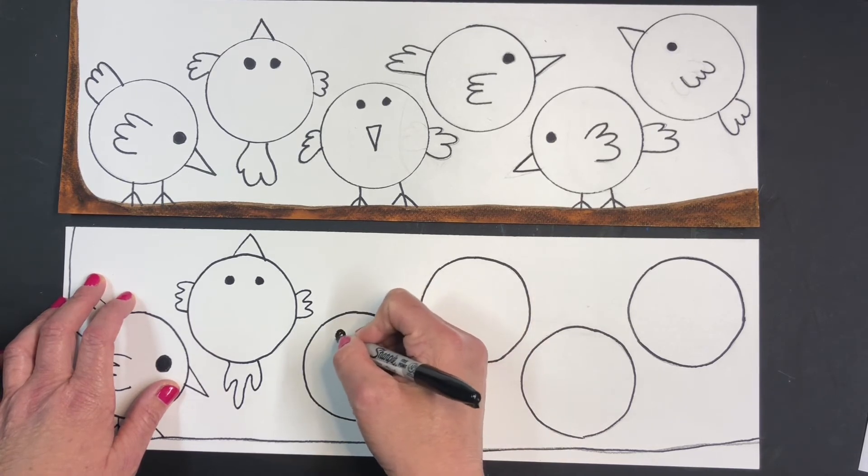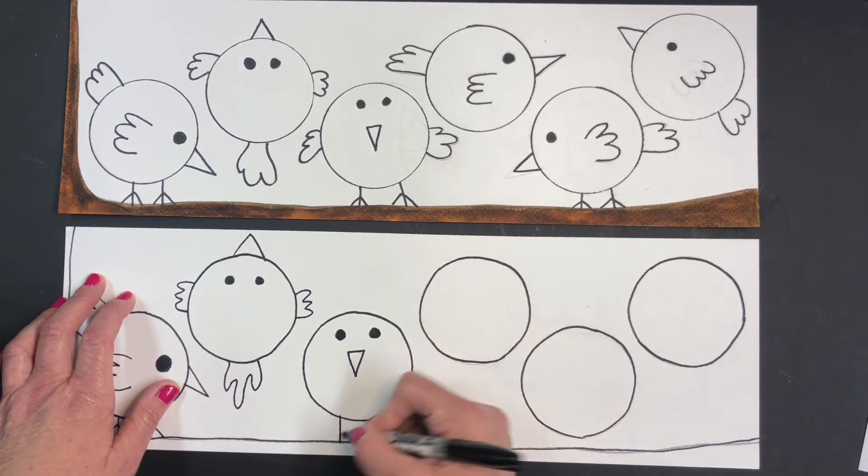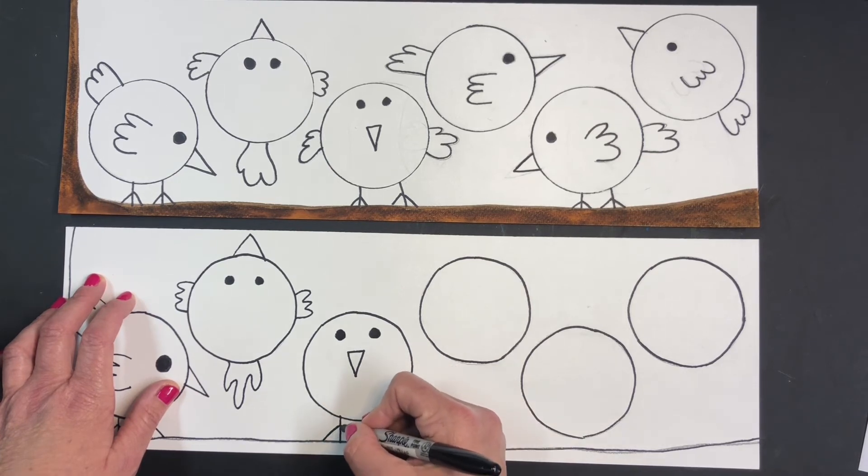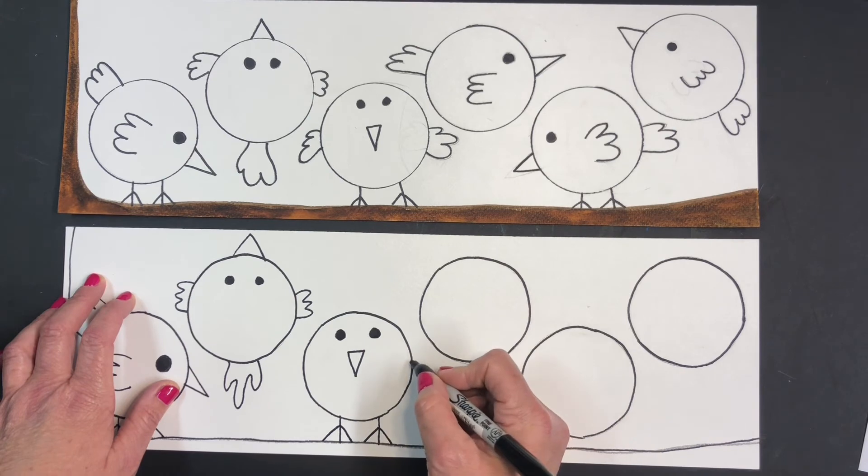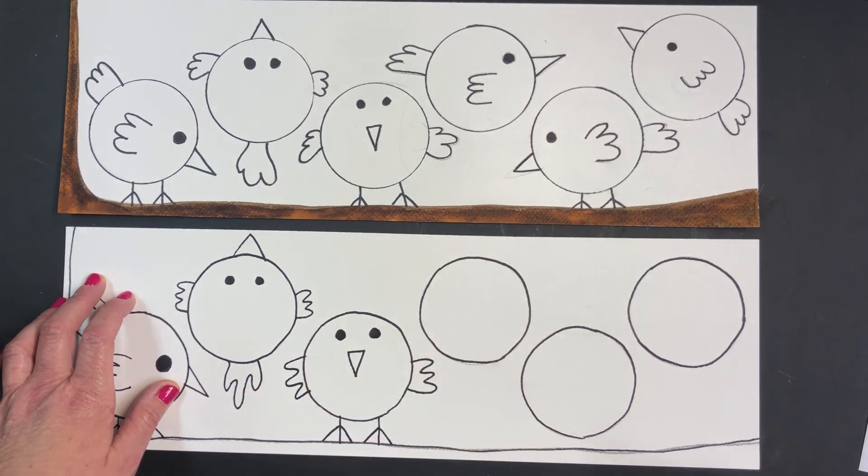And one of the things you want to keep in mind is the relationship of the birds to each other. Are they going to be looking at each other? Are they going to be flying in the same direction? Are they going to be standing? Are they going to be going up to the left? Are they going to be looking down?